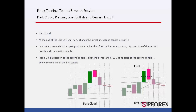Dark Cloud Candle is one of the most important patterns, usually appearing at the reversal point of an uptrend. While the trend is on its way up, a significant news event causes an abrupt change in direction toward the downside, followed by a bearish candle.